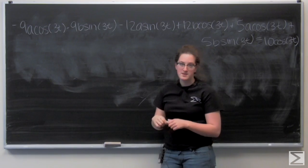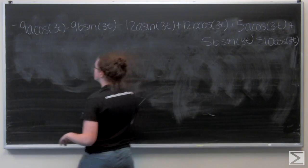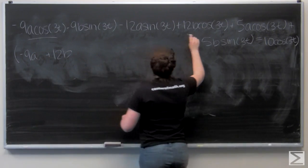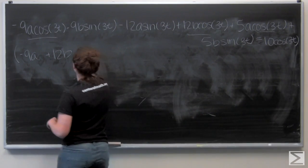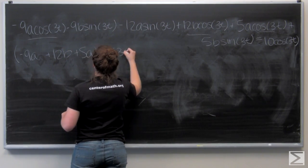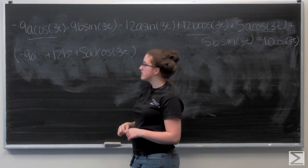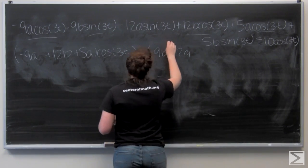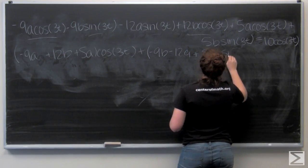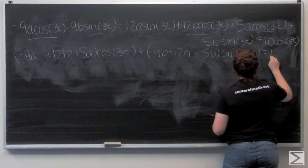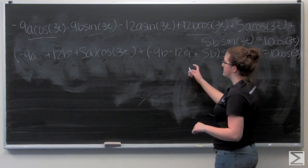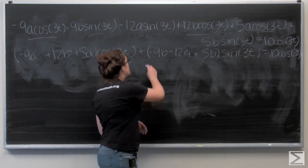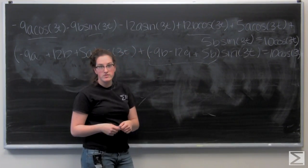So this is kind of a mess. Let's combine the terms with sine and cosine. So I've just combined the coefficients for my three cosine terms and done the same for the sines. Well, on the right side of the equation I only have a cosine term, no sine terms. So I know that this coefficient for sine of 3 has to be equal to 0.